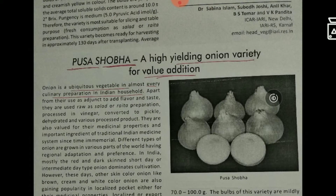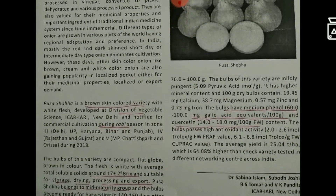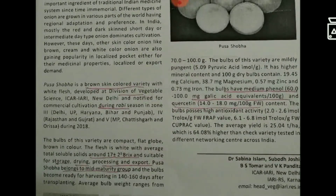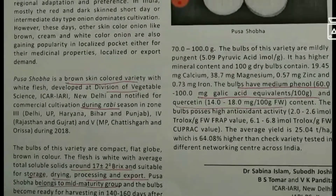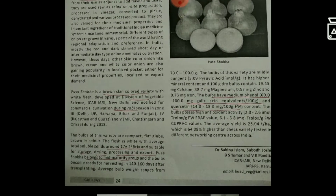Moving to onion — there is a new variety called Pusha Sobai, recently released from IARI. It is a brown skin color variety used for the Kharif season. The TSS is 17 ± 2 degrees Brix, meaning from 15 to 19 degrees Brix. It is a mid-maturity variety, mostly used for processing, drying, and export purposes, and has high antioxidant activity with maximum gallic acid equivalent phenolic content.